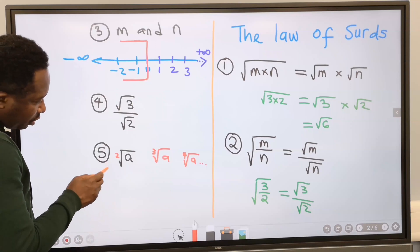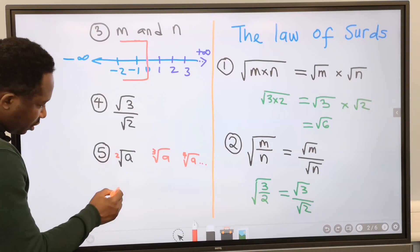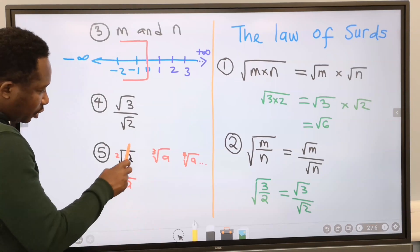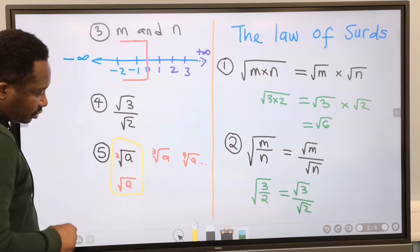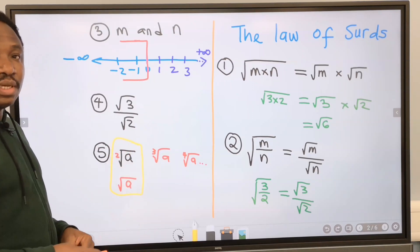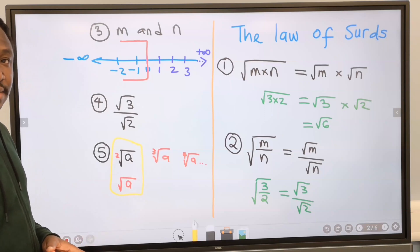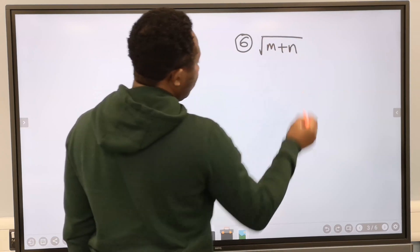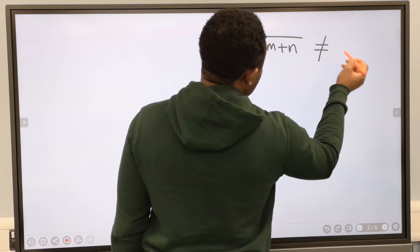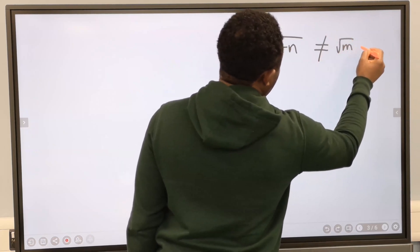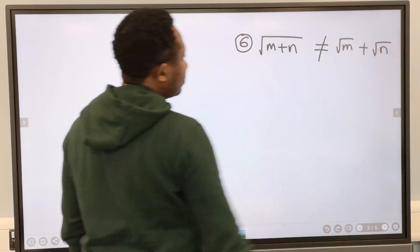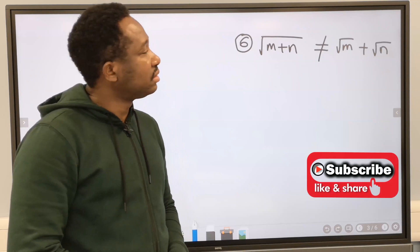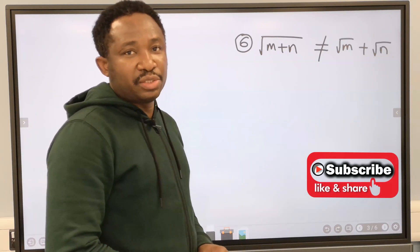Only square root is allowed. And for the square root notation, we do not include the index of 2; we just leave it as the square root symbol. Hence, surds deal with square roots. The next law to consider: the square root of m plus n is not equal to the square root of m plus the square root of n. This does not exist in mathematics and is not allowed in surds.